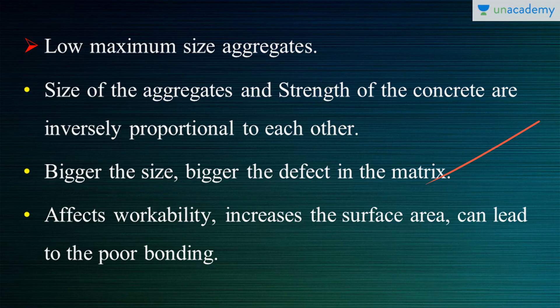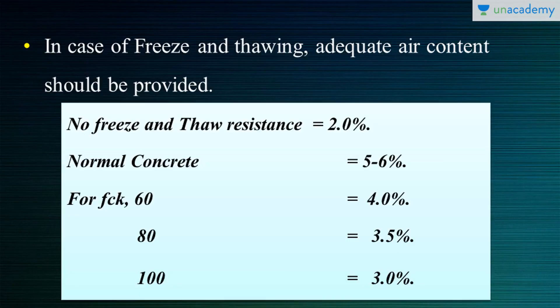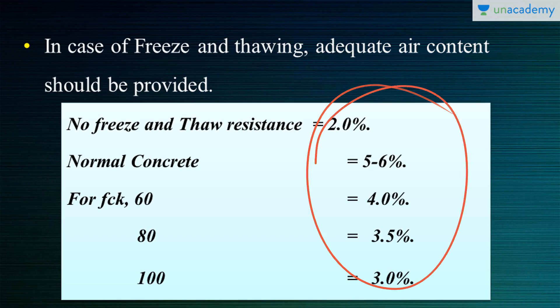There is one more characteristic — low air content. Air entrainment has its own advantages, but in high-strength concrete we cannot fully enjoy those advantages. Increased air content contributes to increased porosity, which adversely affects strength if not proportioned properly. In cases of freeze-thaw conditions, adequate air content should still be provided under proper supervision. These are some of the percentages of air that can be added for different conditions.